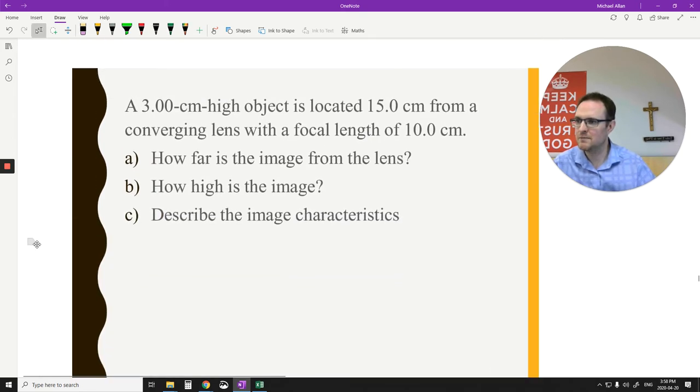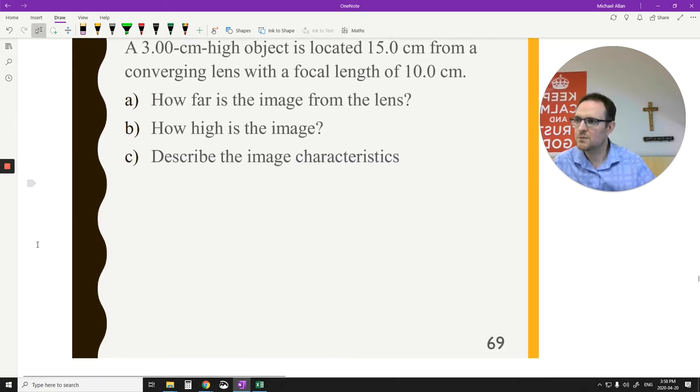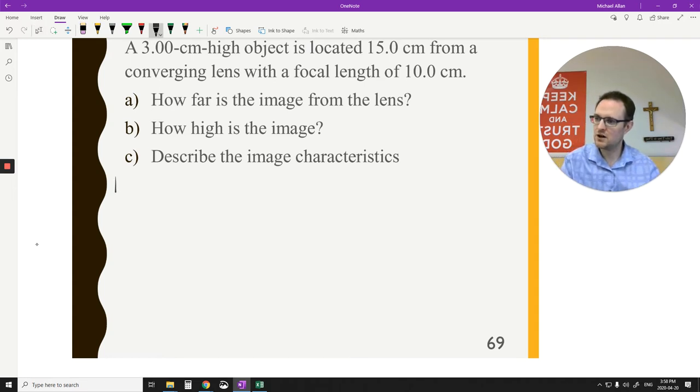Let's try a couple more of these out. Three centimeter high object. So I know the ho is 3 centimeters. It's located 15 centimeters from a converging lens. So what I know about this is a positive focal length. That's 10 centimeters. How far is the image? So I want to know di. How high is the image? So b is hi. And c is the characteristics.